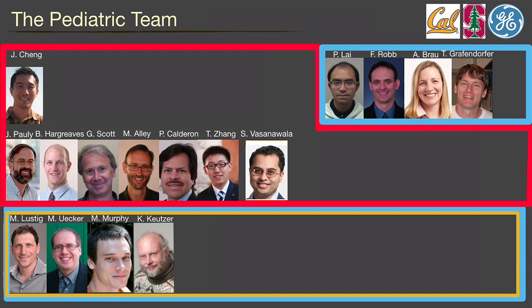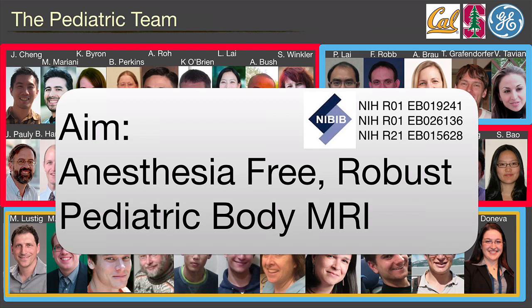About eight years ago, Kurt Koitzer, who is here, gave a talk at this very seminar, talking about the landscape of parallel computing and how domain experts like myself can leverage parallel computing. As time goes by, some people left and some people were added. It's amazing how many people contributed to this particular project, which aims to do anesthesia-free, robust pediatric body MRI — funded by the NIH. Today I'm going to talk primarily about work done at UC Berkeley by Berkeley students, in collaboration with the other institutions.